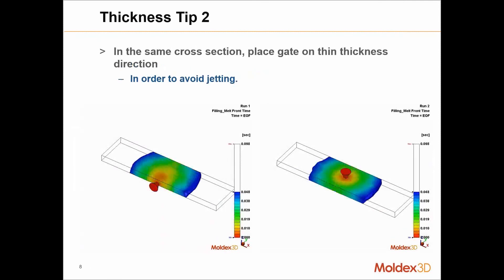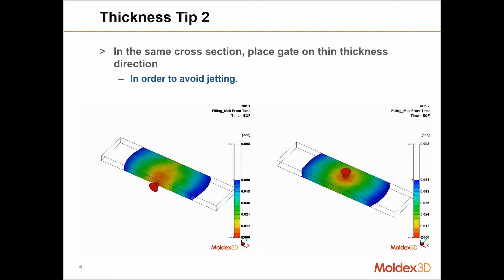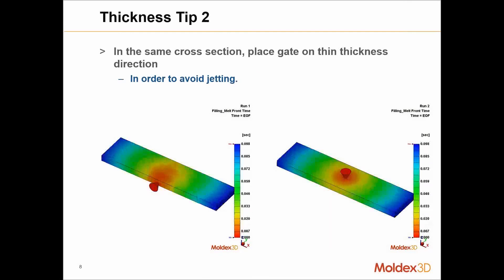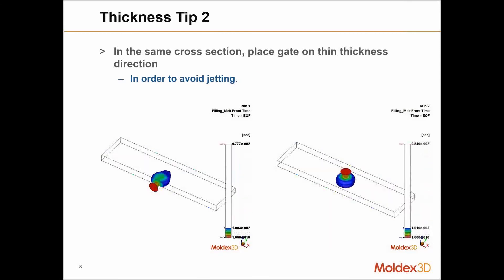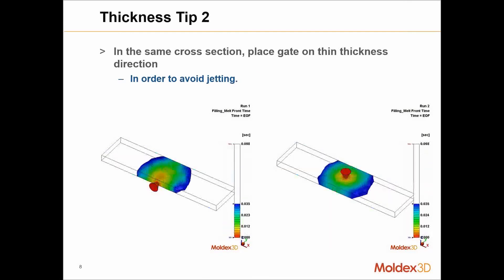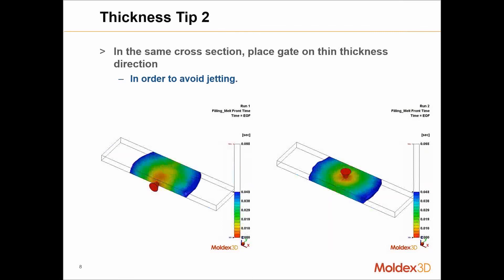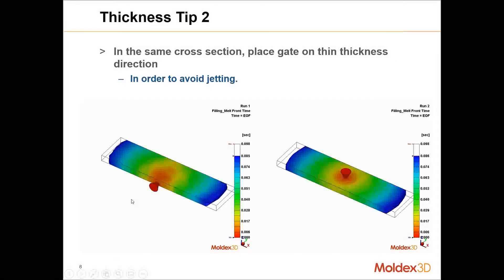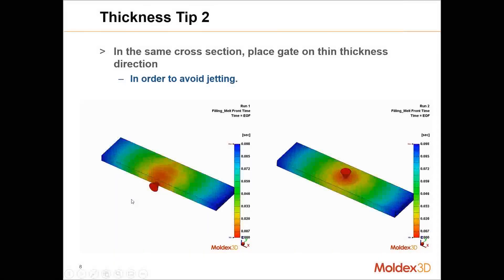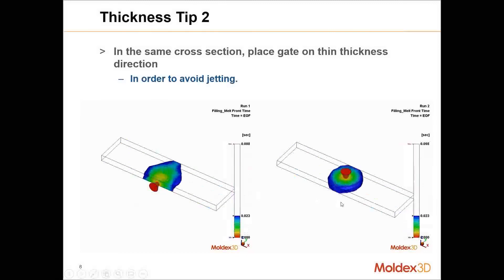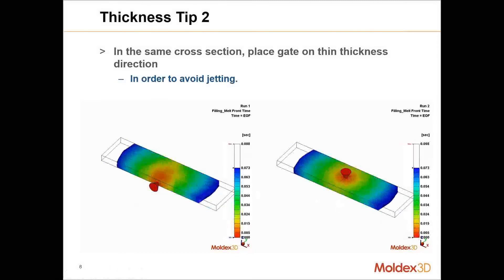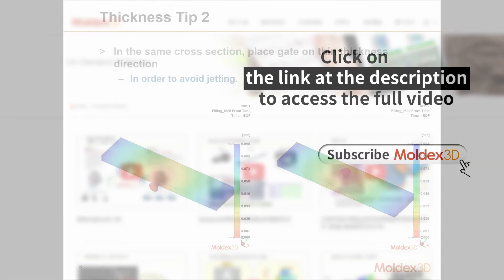Another rule is to put the gate somewhere near a wall so we can avoid jetting. On the left side you can see the jetting phenomenon, while on the right side the gate location produces a much smoother flow than the left side.